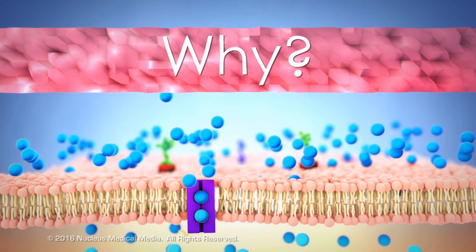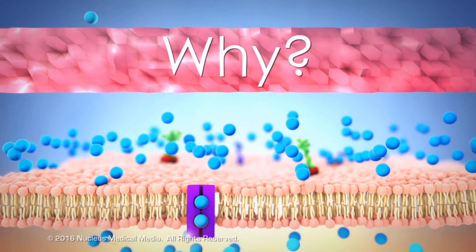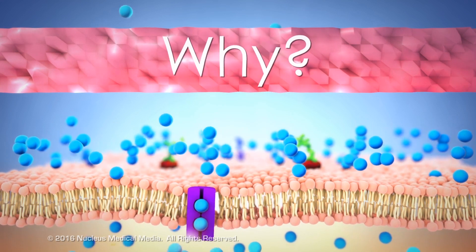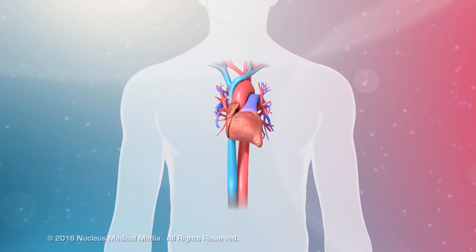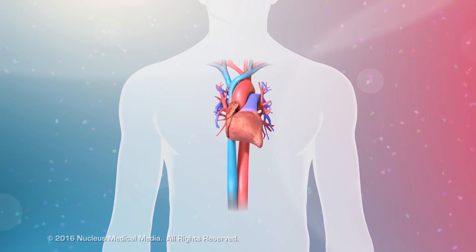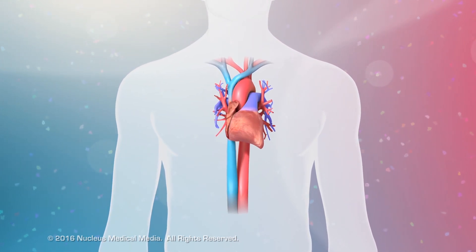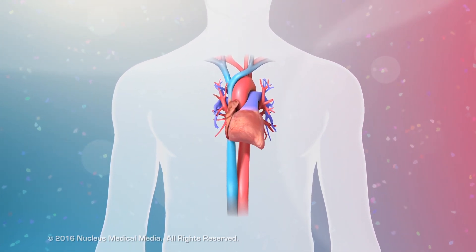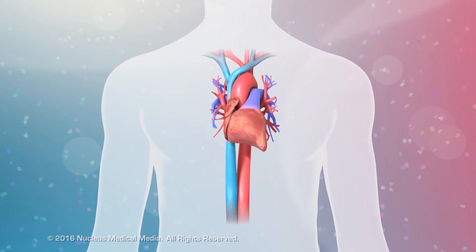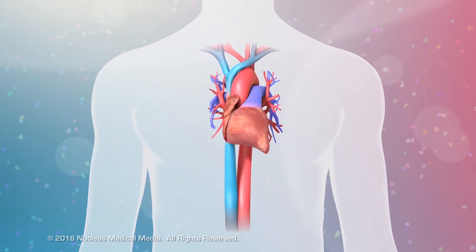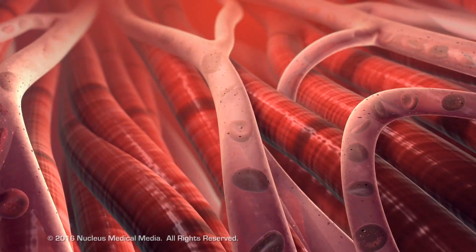Why would the cell need to move particles from a low to high concentration and expend energy to do it? An important example is seen in your heart muscle cells. In order for your heart to beat, there are certain molecules that have to move from an area of low concentration to an area of high concentration for those cardiac muscle cells to work.